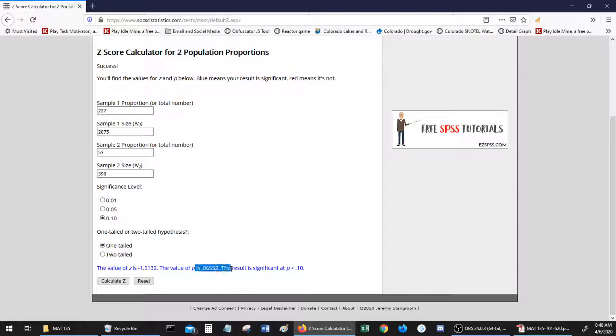So as we predicted, we got a p-value of 0.06552. And as predicted, that was significant, it was less than .10. So we do reject the null hypothesis.